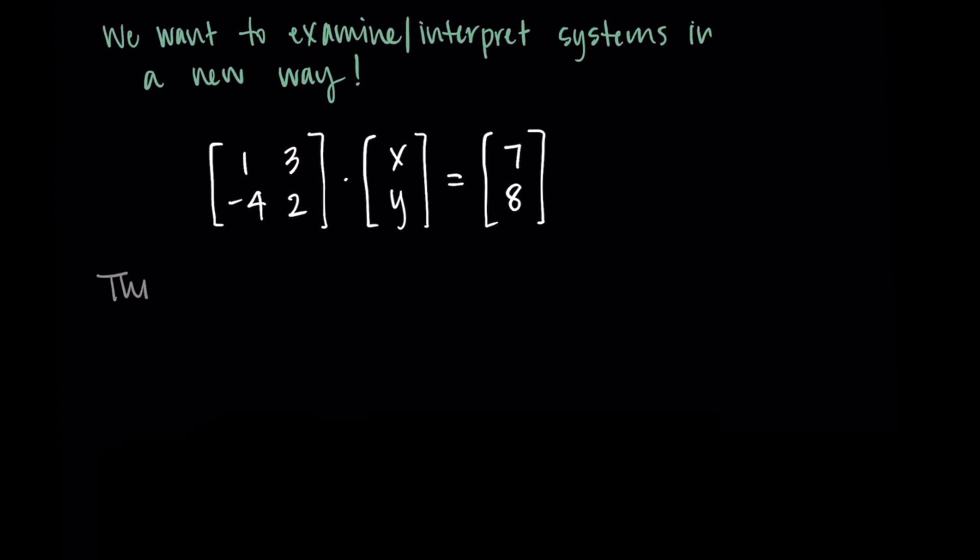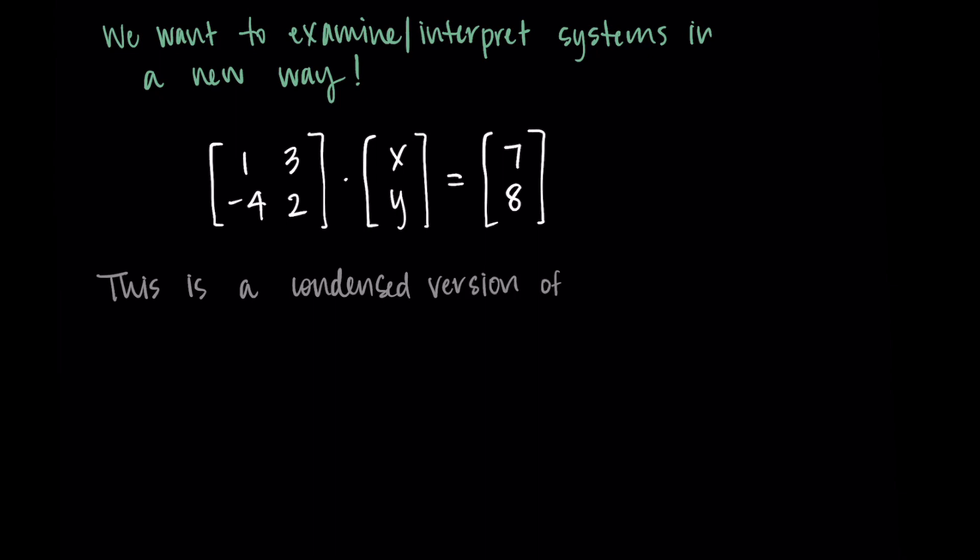In doing this we no longer have an augmented matrix and this is a condensed version of our system. So part of how we can make sense of this is to think of doing a multiplication. And so we can think of taking the first row of the coefficient matrix and doing a dot product with the x y vector.